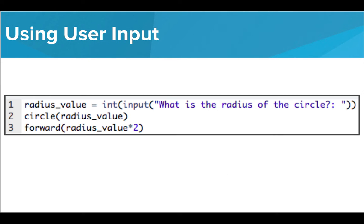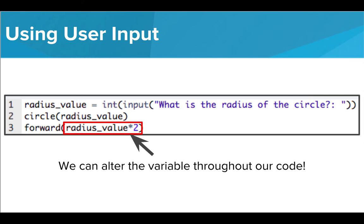In this code, we want the user to tell us what the radius of the circle should be, so we ask the question, what is the circle's radius? We surround it with both the input and int commands. You also may notice that we're changing the value of the user input in the forward command. We can alter user input just as we would a variable's value.